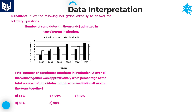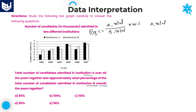The last question: the total number of candidates admitted in Institute A over all the years together was approximately what percent of the total admitted in Institute B over all the years? The required percentage equals A total divided by B total, multiplied by 100. First, I will calculate A total by writing all values of A: 2, 3.5, 5, 6, 4, and 6.5.